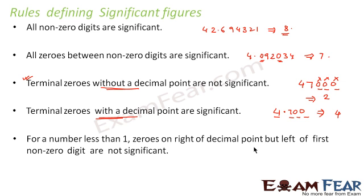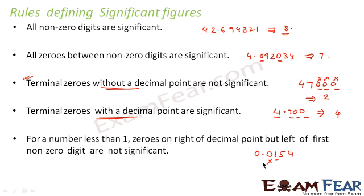For a number less than 1, zeros on the right of the decimal point but to the left of the first non-zero digit are not significant. For example, consider 0.0154. The first non-zero digit is 1. The zeros that lie after the decimal point but before 1 are not significant digits. So in this case we have just 3 significant digits: 1, 5, and 4.